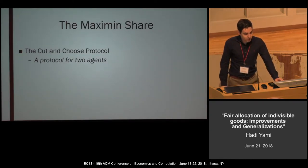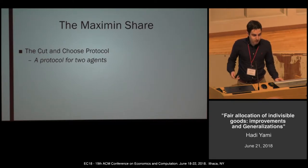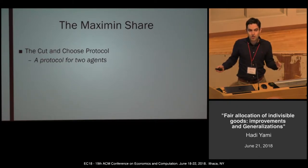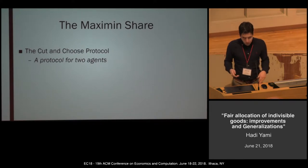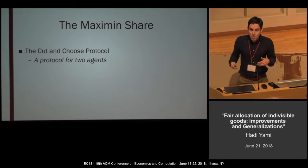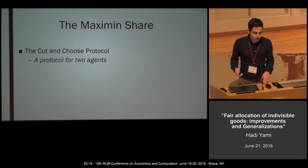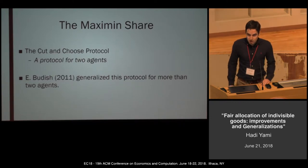Since we cannot guarantee proportionality and envy-freeness for indivisible goods, we use another notion called the maximin share, which is a generalization of the famous cut-and-choose protocol. In cut-and-choose, we have two agents and some items. We ask the first agent to partition all items into two bundles, and then the second agent picks the bundle he prefers. The remaining bundle goes to the first agent.